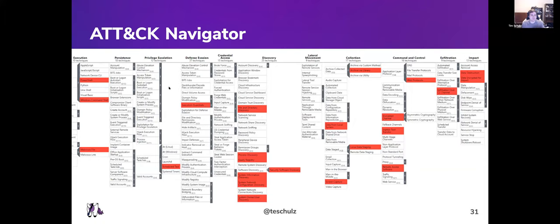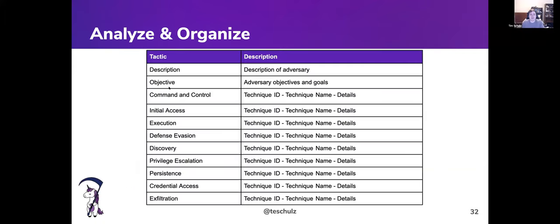Once you've analyzed and organized your techniques, you put them together into something structured. In our Threat Thursdays we break it down by adversary description, attribution, objective — IP theft, intelligence gathering — and then for each ATT&CK tactic, list the technique ID, name, and details. This structure guides how you're going to test.